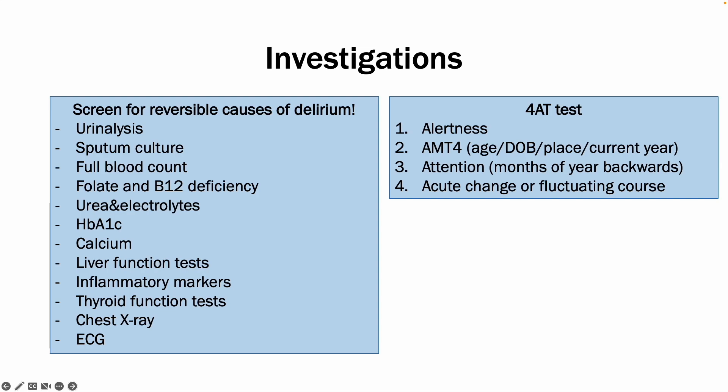The third component is attention — specifically, are they able to tell you the months of the year backwards? Depending on how many they are able to do, their scores differ. And lastly, has there been an acute change or a fluctuating course to their change in consciousness? After answering those four questions and scoring them, you will be able to determine whether it is possible delirium, possible cognitive impairment, or maybe both. This is the clinical test typically used on the wards while you wait for blood test results.